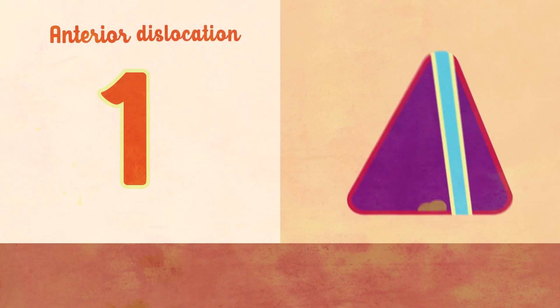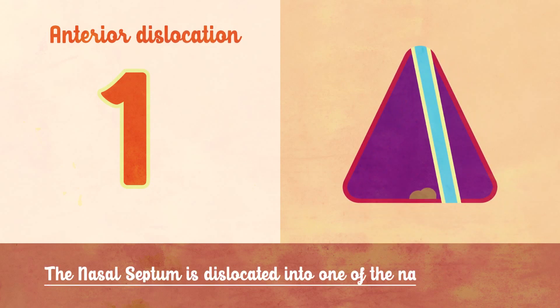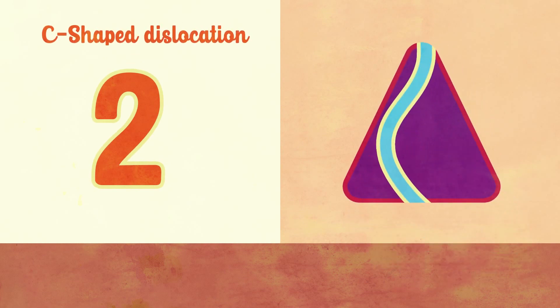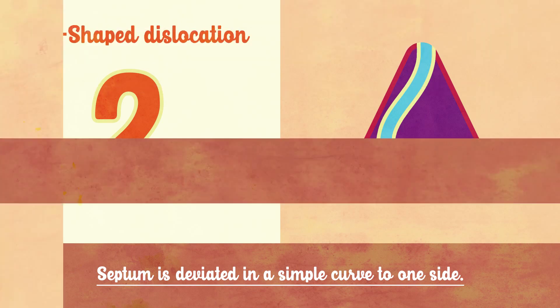Types of DNS. Type 1: Anterior dislocation — the nasal septum is dislocated into one of the nasal chambers. Type 2: C-shape dislocation — the septum is deviated in a simple curve to one side. Compensatory hypertrophy of turbinates occurs on the other side.